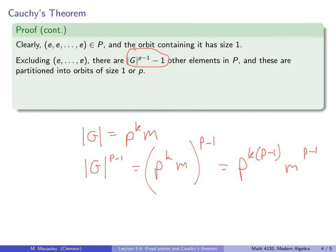It is certainly a multiple of p, right? I mean, here's a bunch of powers of p that divide it. So this thing is a multiple of p. Therefore, if we take that thing and subtract 1 from it, it is not a multiple of p.